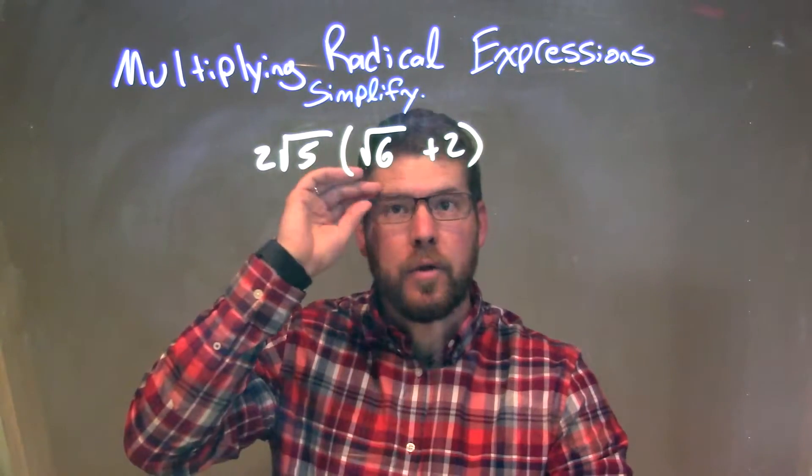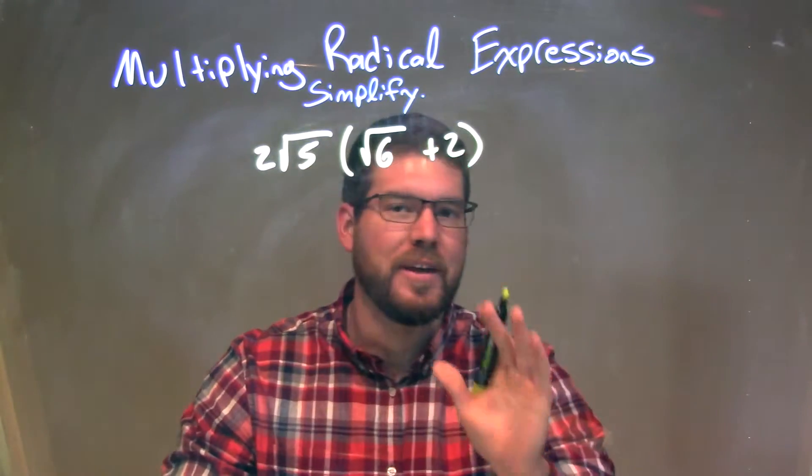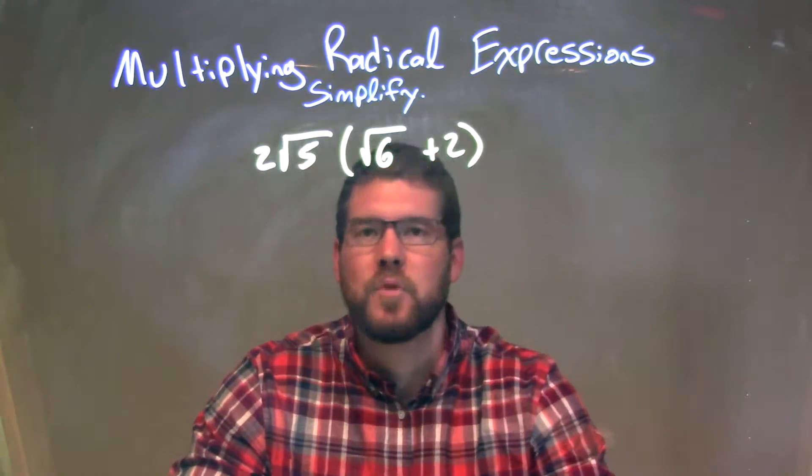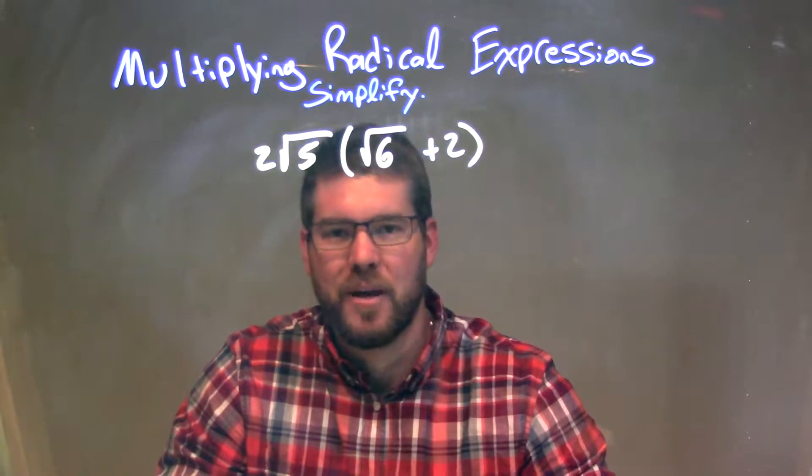Well, I'm looking inside this parentheses right here, can I simplify everything? Not really. The square root of 6 is in the simplest form, and I can't combine it with the 2.